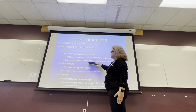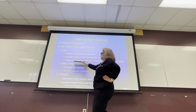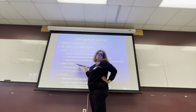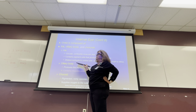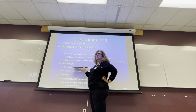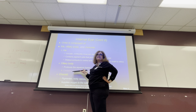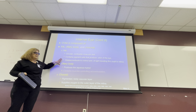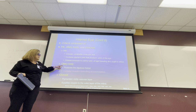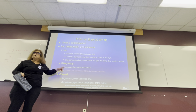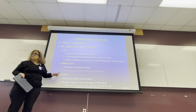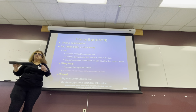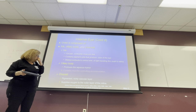The iris dilates and contracts, but who helps? The ciliary body — it's the muscle. The ciliary body and the iris are touching each other. Because the ciliary body is a muscle, it moves, and because it moves, the iris helps the pupil to open or close.